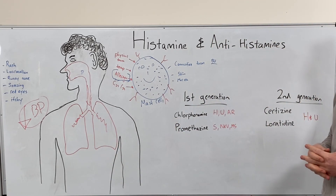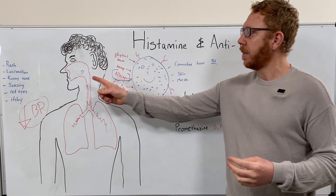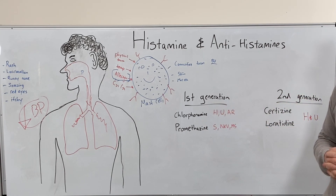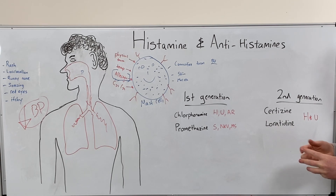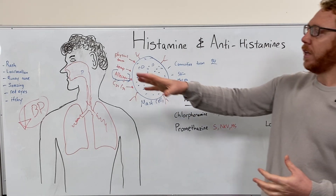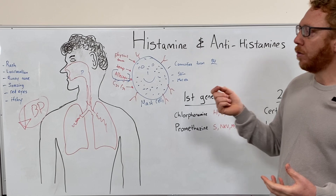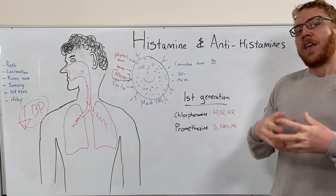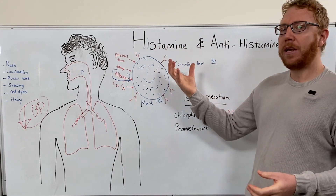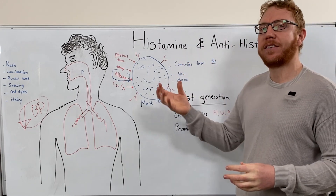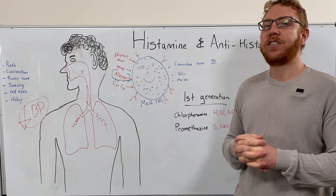This led to the development of second generation drugs, which are much more specific and less lipid soluble, so they're less likely to cross into the brain — meaning you don't get the drowsiness of the first generation. These would be considered non-drowsy antihistamines. Common examples are cetirizine and loratadine, highly used for hay fever and rashes. These can be used systemically as a tablet, but also as drops or nasal sprays, which work in a more localized region with fewer side effects.